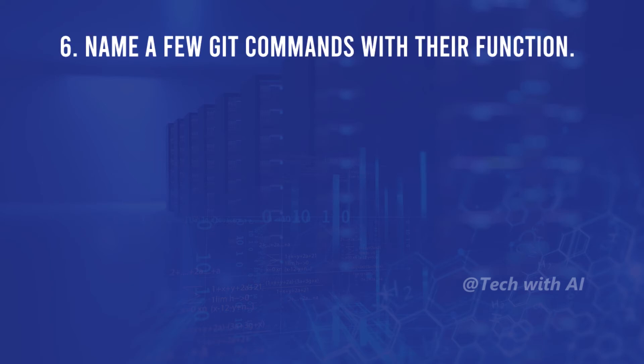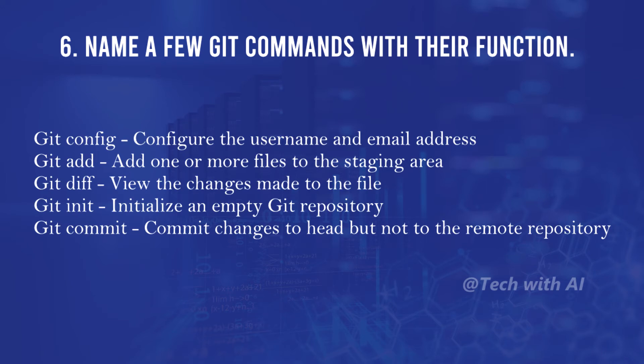Name a few Git commands with their function. git config: configures the username and email address. git add: adds one or more files to the staging area. git diff: shows the changes made to a file. git init: initializes an empty Git repository. git commit: commits changes to HEAD but not to the remote repository.